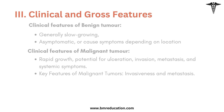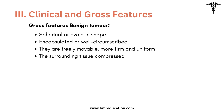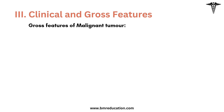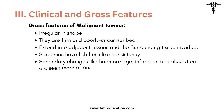Gross features of benign tumors: they are spherical or ovoid in shape, encapsulated or well-circumscribed, freely movable, more firm and uniform, and the surrounding tissue is compressed. Gross features of malignant tumors: they are irregular in shape, firm and poorly circumscribed, and they extend into adjacent tissues — the surrounding tissue is invaded. Sarcomas have a fish-flesh-like consistency. Secondary changes like hemorrhage, infarction, and ulceration are seen more often.